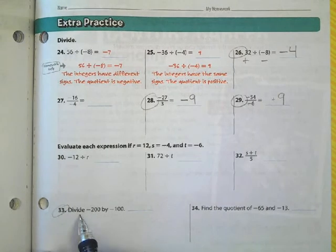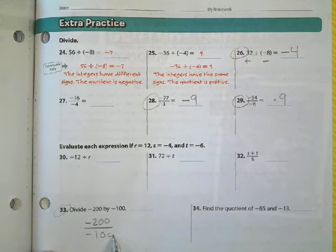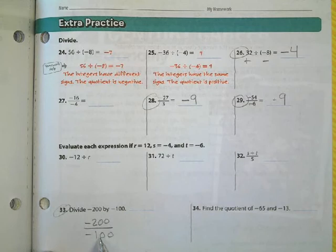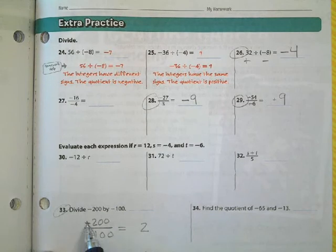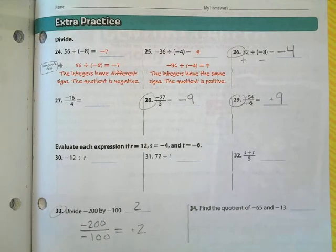This last one I'm going to do for you: divide negative 200 by negative 100. 200 divided by 100 happens to be 2, and the signs are the same, so I end up with a positive 2 as my solution for that problem.